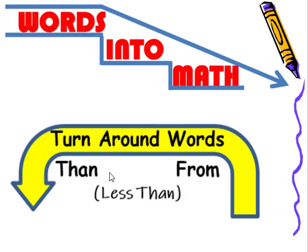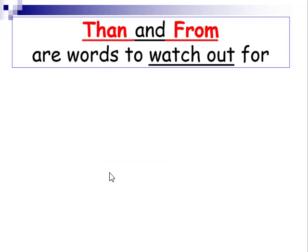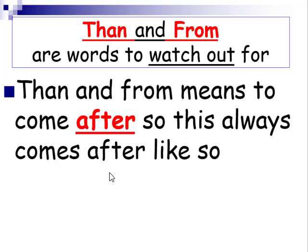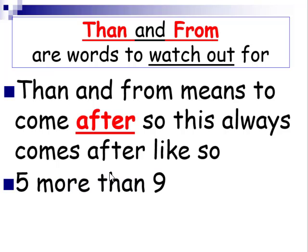We also have words that are called turnaround words, the words then and from. Then and from are words to watch out for. Then and from means to come after. If we see five more than nine, we have to start with the nine because we're going more than nine. So where our starting point is nine, five more than it would be nine plus five.